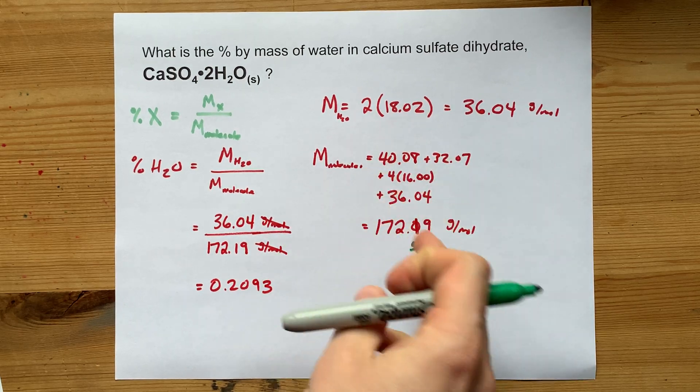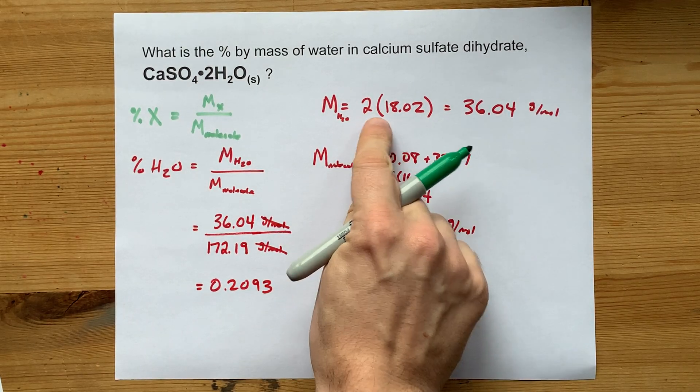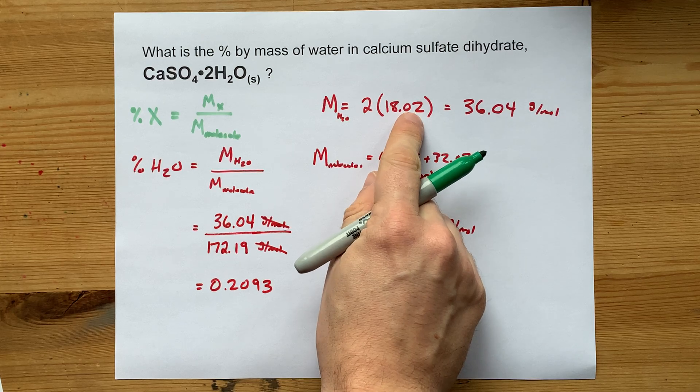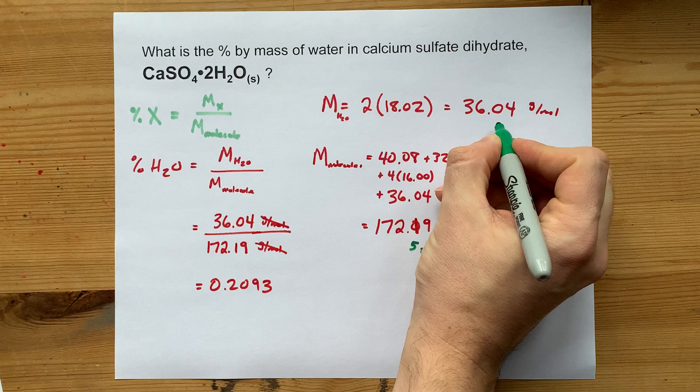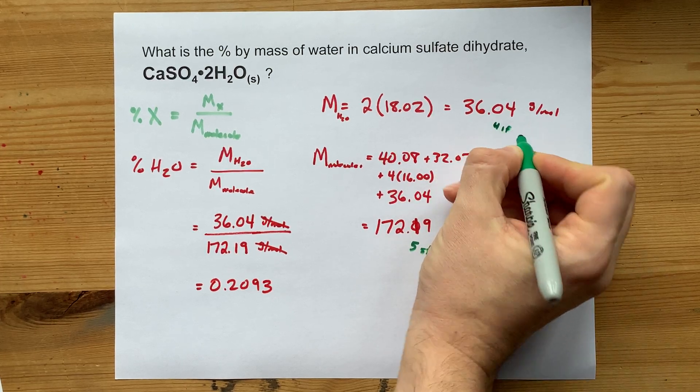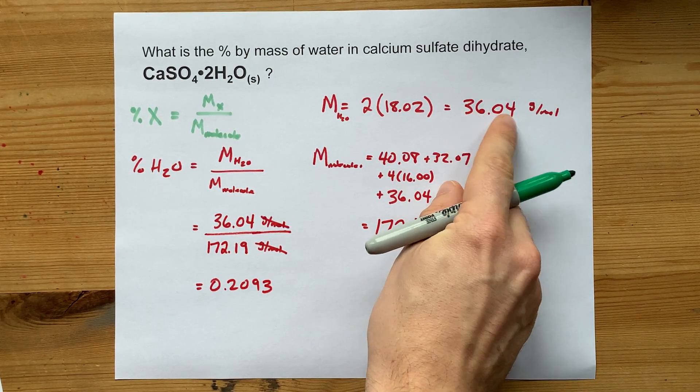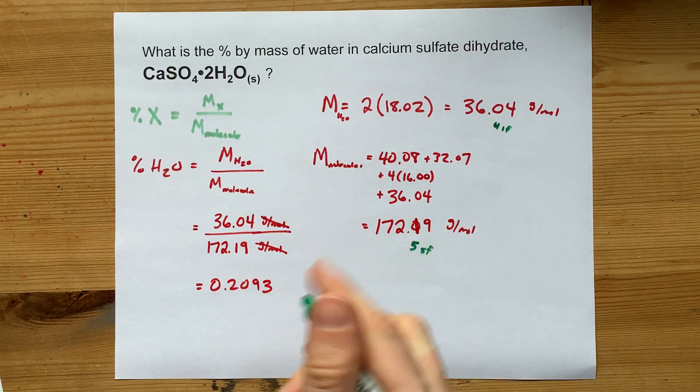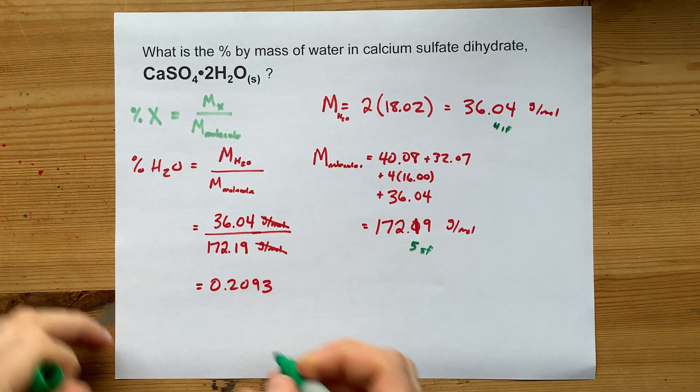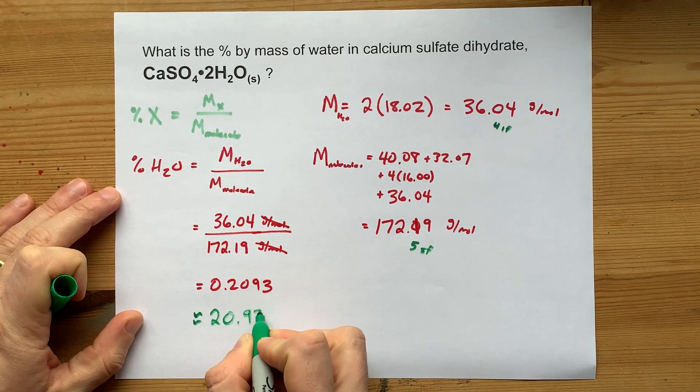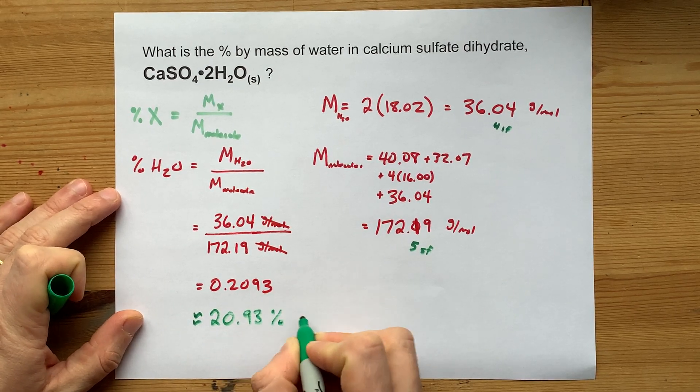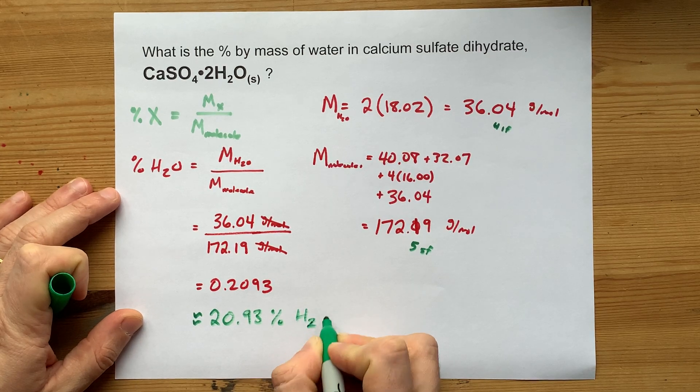We're keeping the number of decimal places for adding. And here, these each had two decimal places. So, when we add all those together, we end up with two decimal places. This had four significant figures. 1, 2, 3, 4. And thus, we need four significant figures here. We've got it. I'm just going to convert it to a percent because your teacher's probably looking for that. It is 20.93% water.